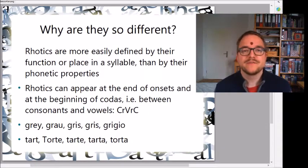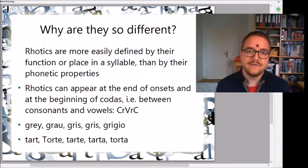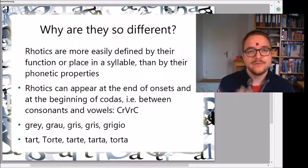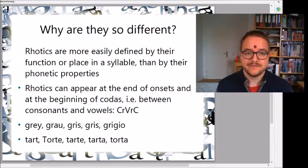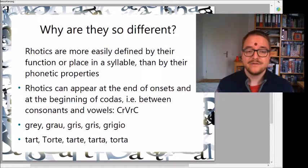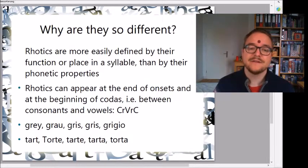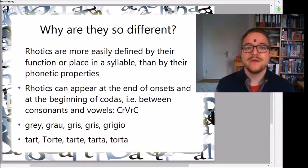Why are there so many different rotics, or why do they have so many different forms? One important thing to know is that rotics are more easily defined by their function or place in a syllable than by their phonetic properties. They usually appear in a certain place in syllables — at the end of onsets and at the beginning of codas — so R's can appear in front of or after the main vowel in a syllable.